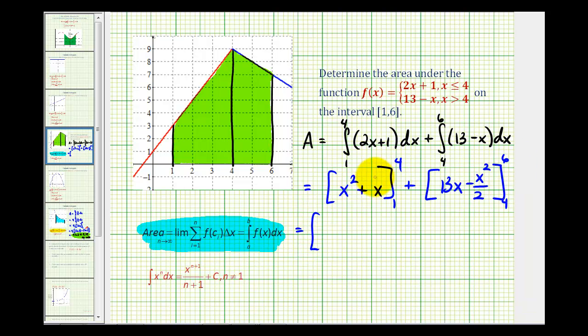So replacing x with four we're going to have 16 plus 4, that's 20, minus replacing x with one we'd have 1 squared plus 1, or 2.